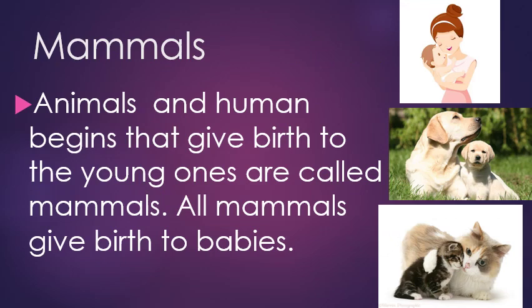The next new term is mammals. Animals and human beings that give birth to young ones are called mammals. All mammals give birth to babies. As we know, female dogs give birth to puppies, cats give birth to kittens, and so on.